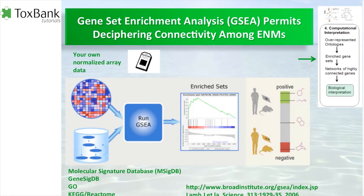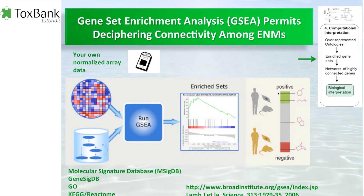This score can be coupled to large collections, for example the Connectivity Map, which contains something like 1,300 drug-like small molecules along with microarray data and gene expression data. You can do one experiment yourself, perform a gene set enrichment analysis, and compare whether you have a positive score — or a reverse score — to agents already in that database.